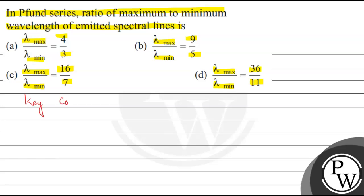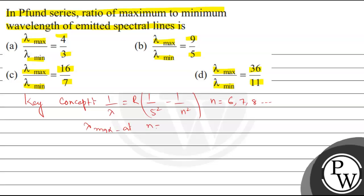For the Pfund series, the formula is: 1/λ = R(1/5² - 1/n²), where n = 6, 7, 8, and so on. λ will be maximum at n = 6 and λ will be minimum at n = infinity.